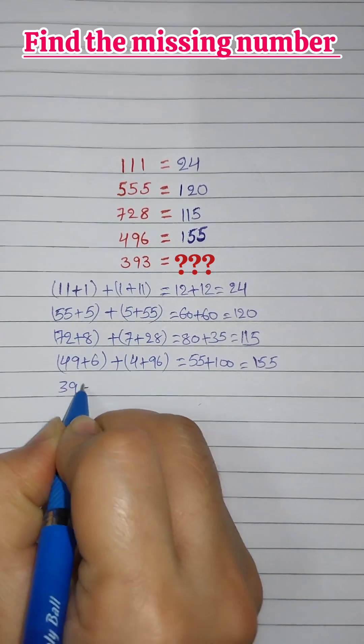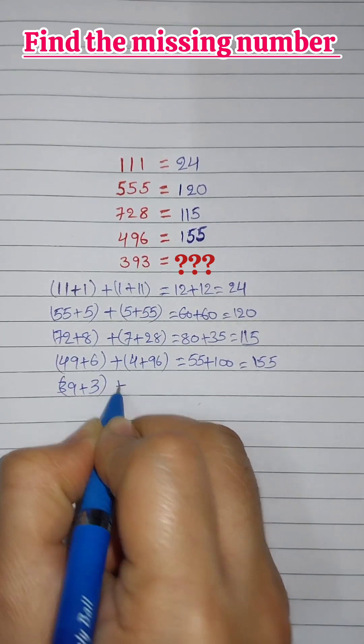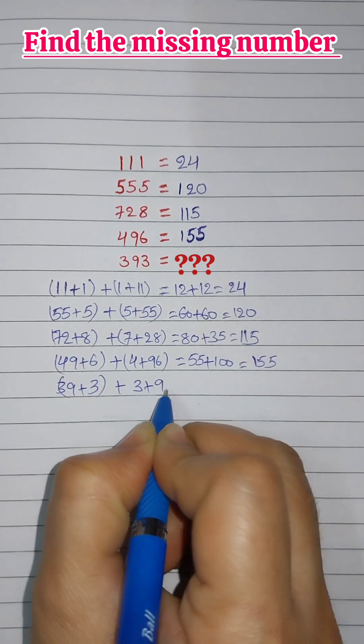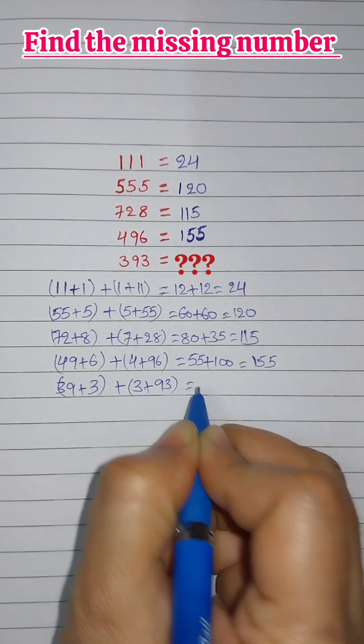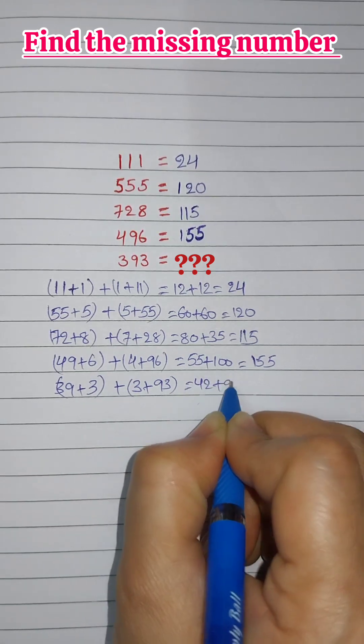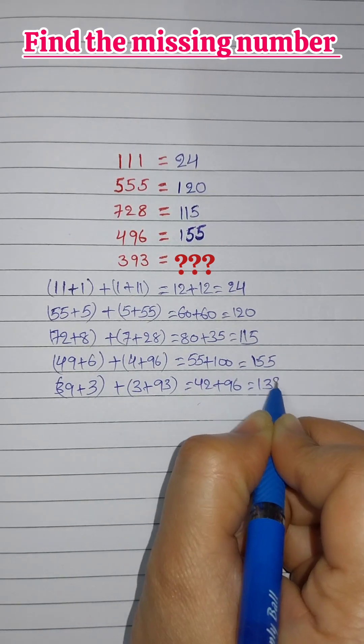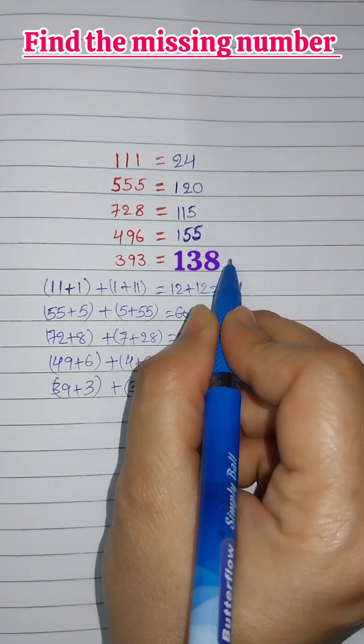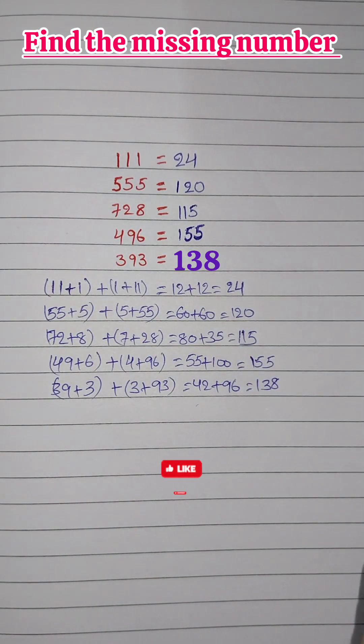For 393, 39 plus 3 plus 3 plus 93 equals 42 plus 96 equals 138. 138 is that number. This is the pattern behind that number.